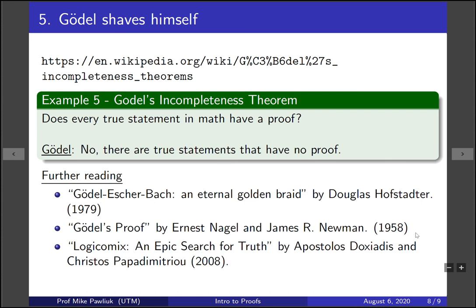Gödel's Proof was written in 1958. It's a short book that explains the essential parts of the proof of Gödel's incompleteness theorem. It is written for non-math people, so it doesn't get into theorems and proofs, but gives you the basic idea in an understandable way.